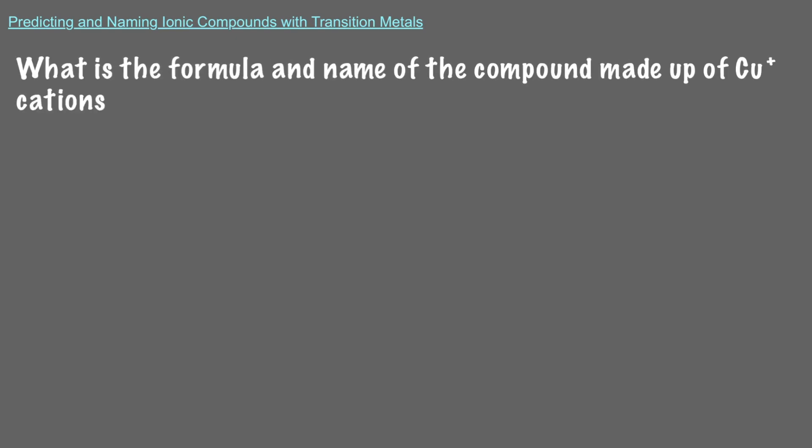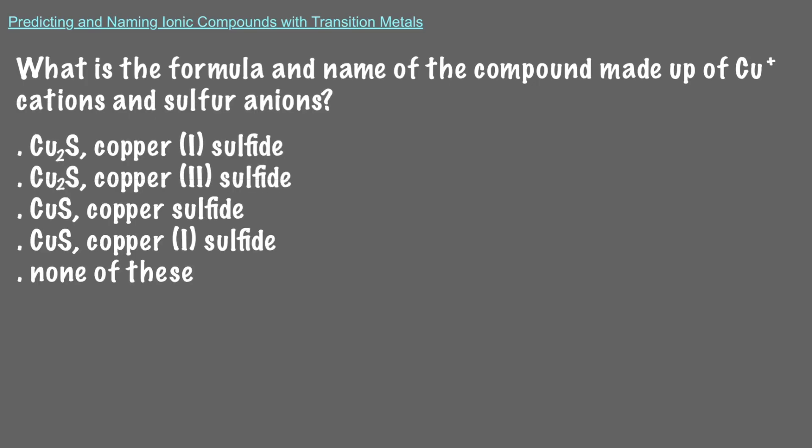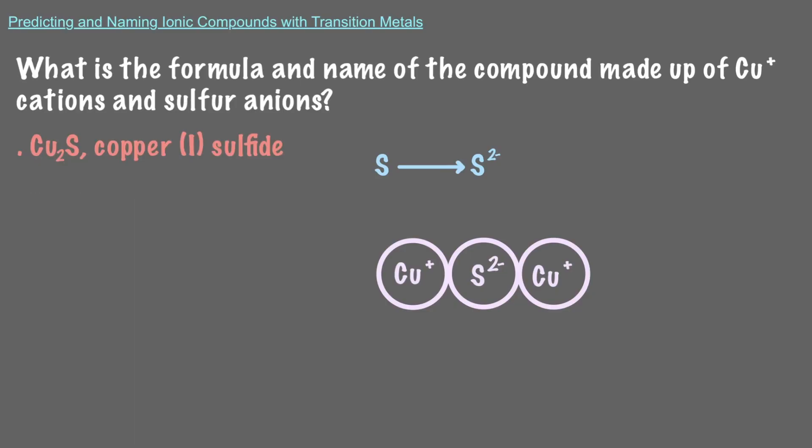Let's do one last example. What is the formula and name of the compound made up of Cu+ cations and sulfur anions? We know that sulfur makes anions with a negative 2 charge, since it belongs to group 16 of the periodic table. So we need 2 copper cations to balance out the negative charges. Therefore, the formula for the compound is Cu2S, and its name is copper (I) sulfide, since the copper cation has a positive 1 charge.